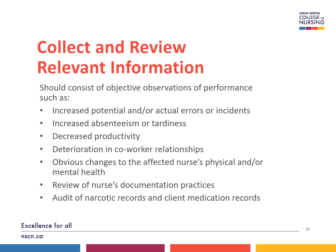The collection and review of information should consist of objective observations of performance, such as increased potential and/or actual errors or incidents, increased absenteeism or tardiness, decreased productivity, deterioration in co-worker relationships, or obvious changes to the affected nurse's physical and/or mental health. In all cases where a nurse is suspected of being impaired at work, a review of the nurse's documentation practice is necessary. Even if there is no immediate evidence of diversion, an audit of narcotic records and client medication records should be undertaken.